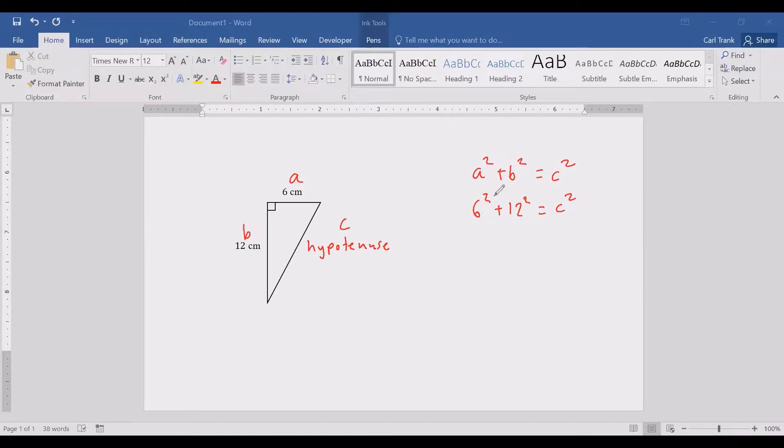Continuing we have 6 squared plus 12 squared equals C squared. 6 squared equals 36 plus 12 squared equals 144 equals C squared. 36 plus 144 equals 180. Now we have 180 equals C squared. To get C by itself we are going to take a square root of both sides. The square root and the square will cancel which means we have C equals square root of 180.